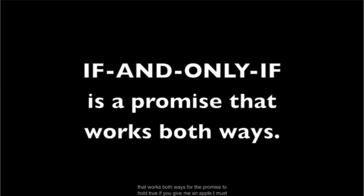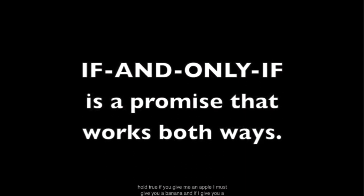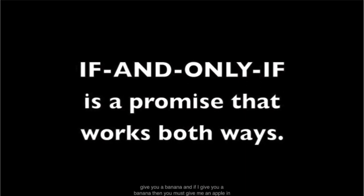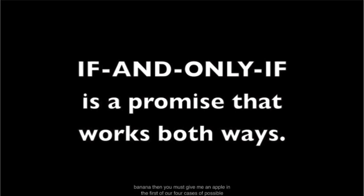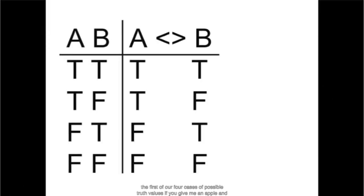For the promise to hold true, if you give me an apple, I must give you a banana. And if I give you a banana, then you must give me an apple. In the first of our four cases of possible truth values, if you give me an apple and I give you a banana, the two-way promise holds true.